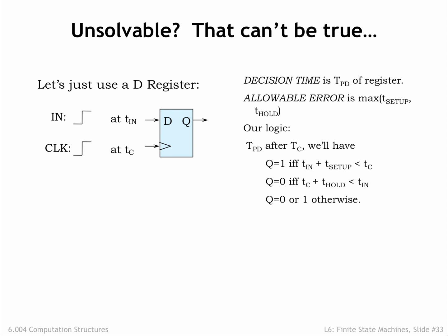If IN transitions during the setup and hold times with respect to the rising edge of clock, we know we've violated the static discipline and we can't tell whether the register will store a 0 or a 1. But in this case, our specification lets us produce either answer, so we're good to go, right?